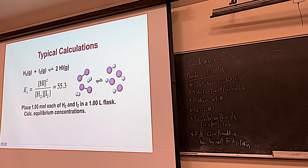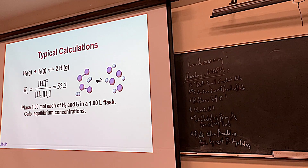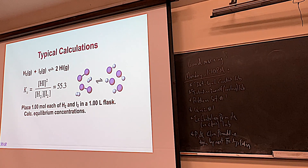We're placing a mole of H2 and a mole of I2 in a 1-liter flask. Everything with square brackets is moles per liter — molarity — so they're both starting at 1 mol/L. We can use this information and the equilibrium constant to calculate the equilibrium concentrations of HI, H2, and I2. At equilibrium, H2 and I2 will be less than 1 mol/L, and we'll probably have more HI.